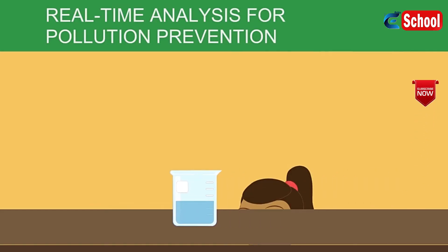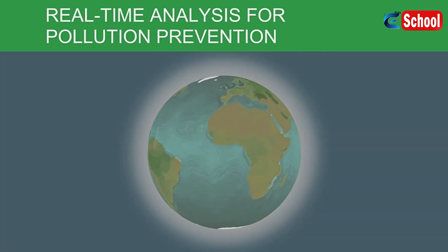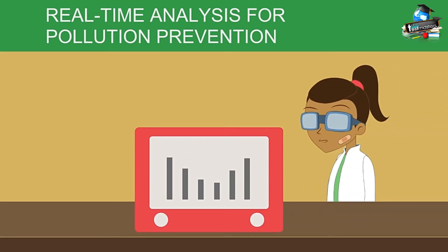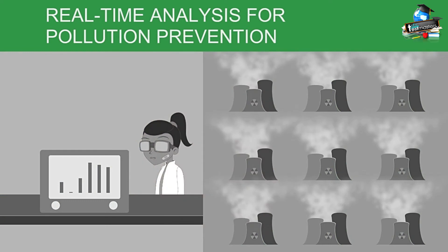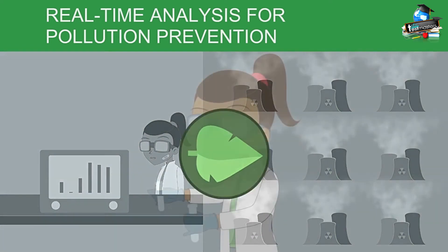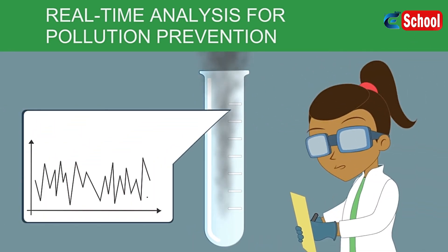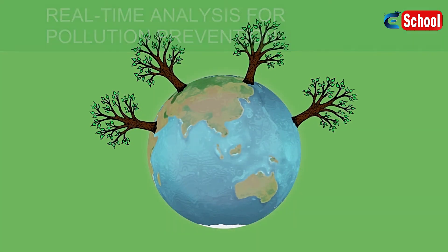One of the biggest challenges chemists face is knowing what impact their synthesis is going to have on the environment. Monitoring a process on a small scale to see what pollution is produced at a particular stage of a reaction can reduce the pollution produced in large-scale synthesis. Looking at pollution produced on a small scale and in real time enables chemists to know where they have to make changes in their large-scale synthesis to ensure their practices have a lower environmental impact.